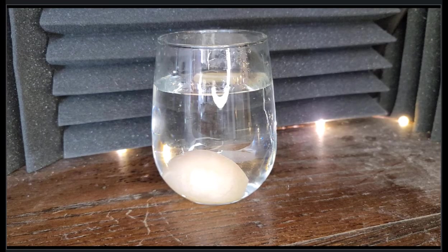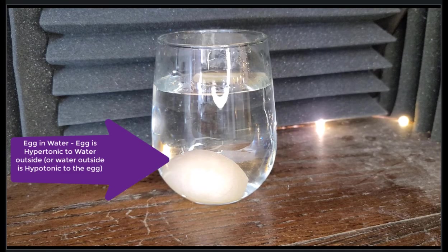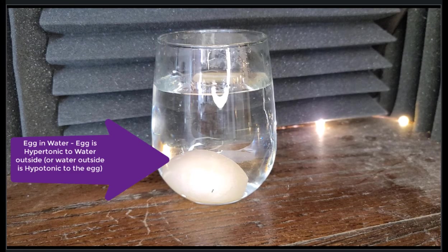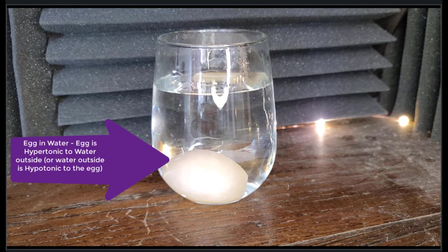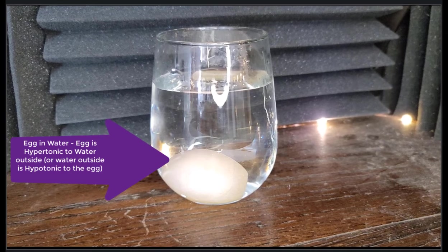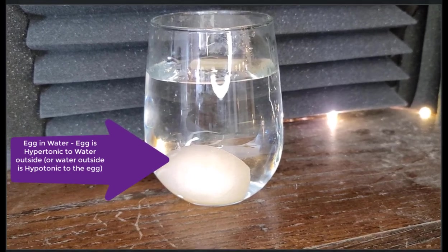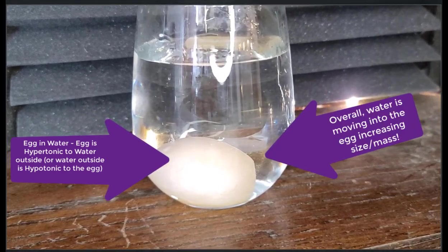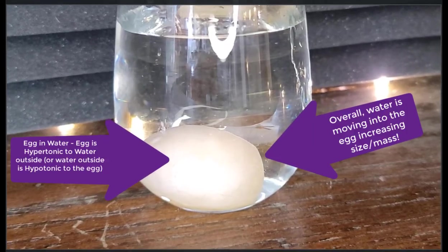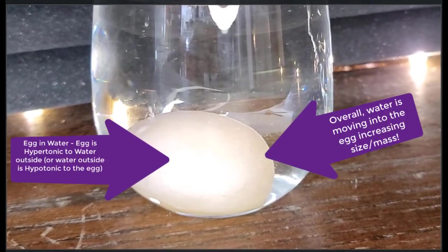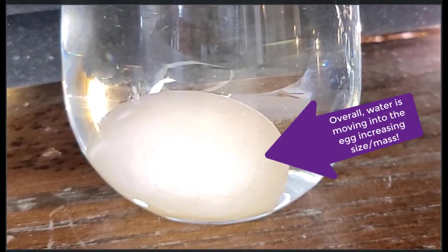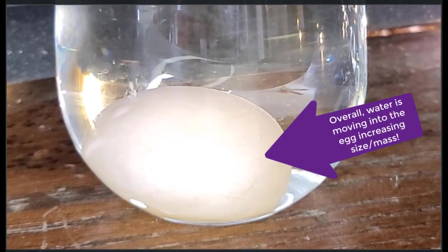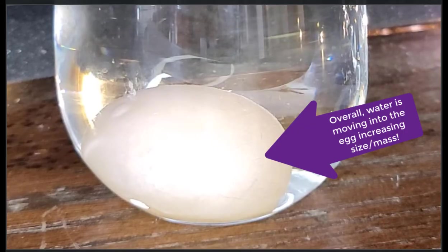By watching the egg closely, you can see that it is getting larger in size. The water solution at this point is hypotonic to the egg and so overall water is moving mostly into the egg resulting in it becoming larger and probably weighing more at the end when we decide to weigh it. But right now you can see that the egg is actually getting larger in size.